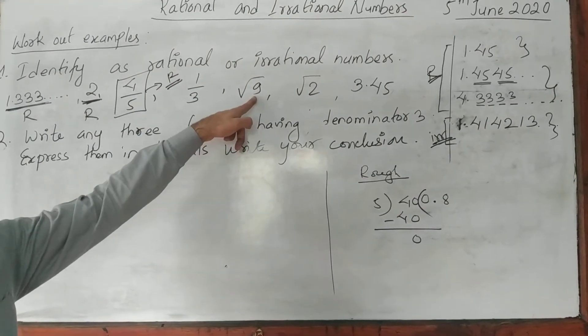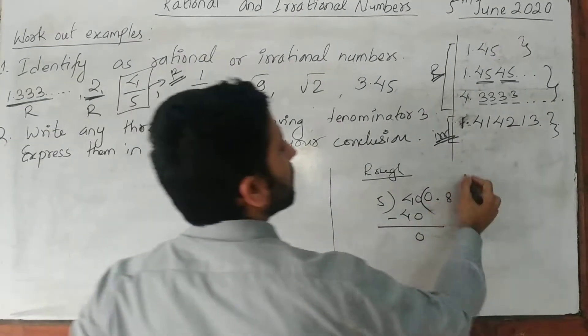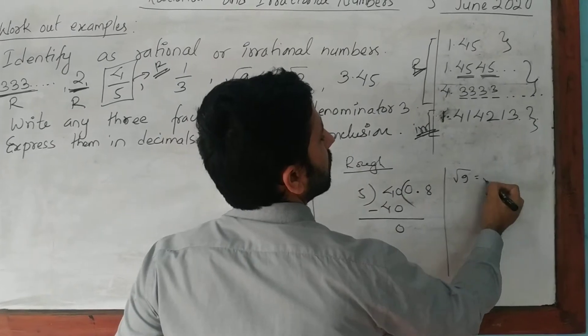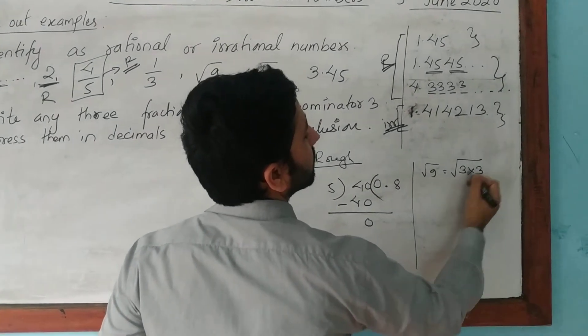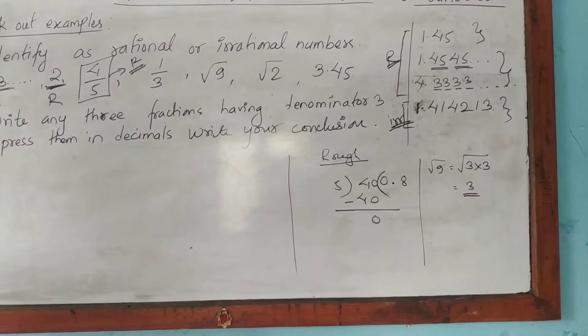And root 9. Root 9 means we have studied. Root 9 is equivalent to root of 3 into 3. That means 3. 3 is a whole number. It is a rational number.